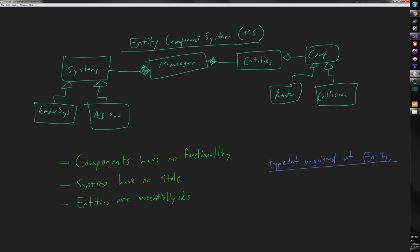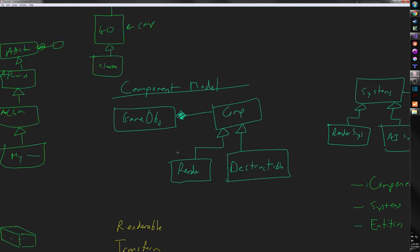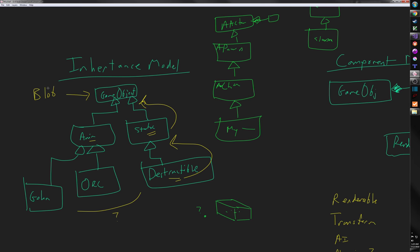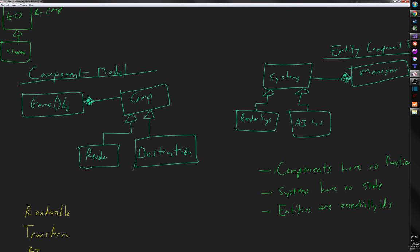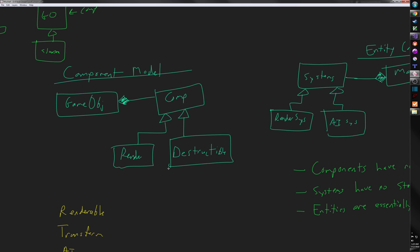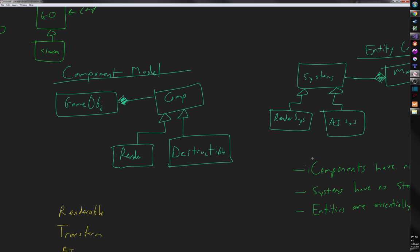What are some of the advantages here — what's better about ECS than a component model? I think we've all completely moved past an inheritance model. We just have to keep in mind the dangers of the component model. Unity used it and they're kind of moving away from it a little bit. Unreal, interestingly, is trying to move towards ECS. So why is this a good or bad thing? What are the advantages and disadvantages?